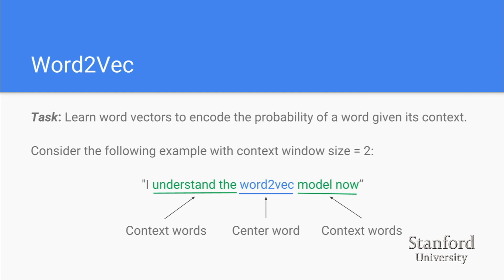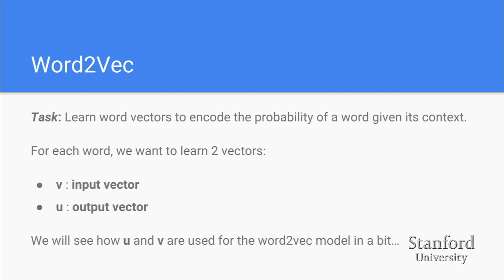To recap: Word2Vec's task is to learn word vectors that encode the probability of a word given its context. Consider the example sentence 'I understand the Word2Vec model now' with a window size of two. If the center word is 'Word2Vec', then 'understand', 'the', 'and', and 'model now' become the context words. For each word, we have two vectors: the input vector V and the output vector U.